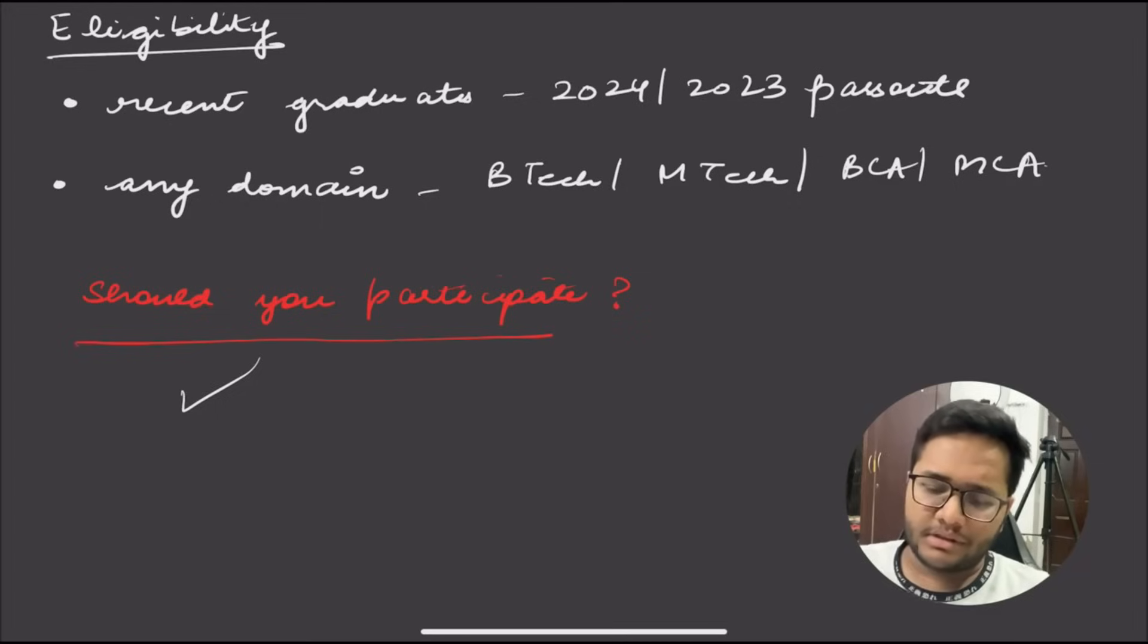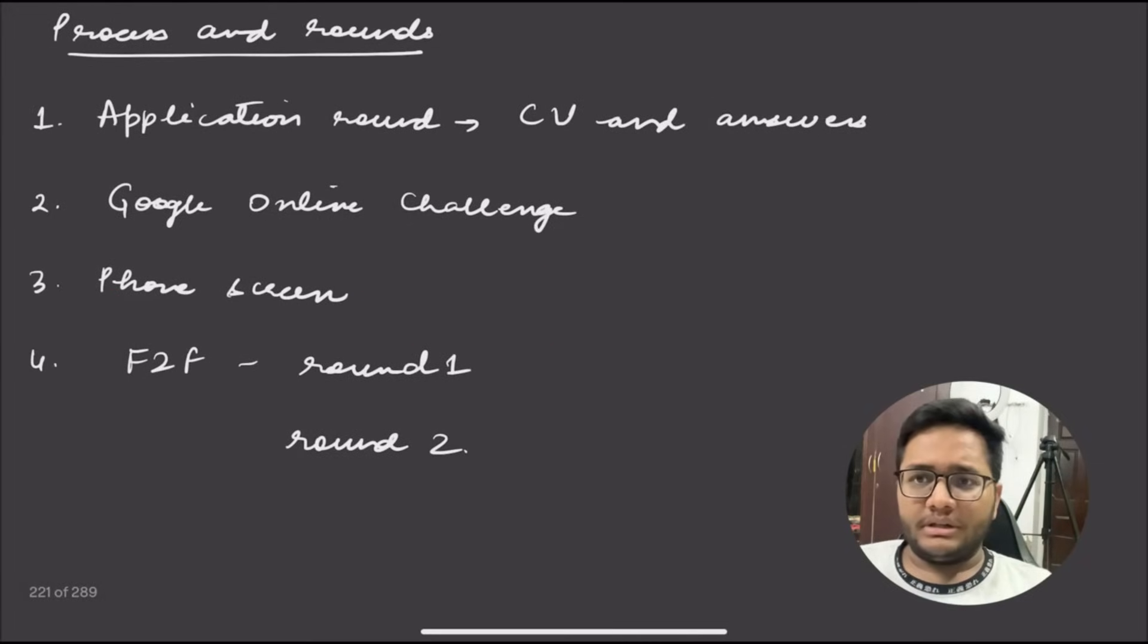Process and rounds: There will be four to five rounds. First is the application round, which is very important. You need to submit your CV or resume as well as some essay-type questions where you need to explain why you want to be part of this particular program. This is very important because the maximum of you will be shortlisted based upon your answers. These answers should show why you're motivated to pursue this journey.